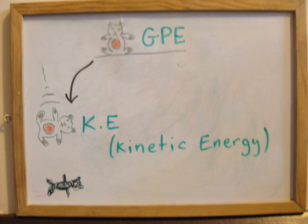As we know, energy can't be created or destroyed. This is why, as an object loses gravitational potential energy, it is converted into kinetic energy.